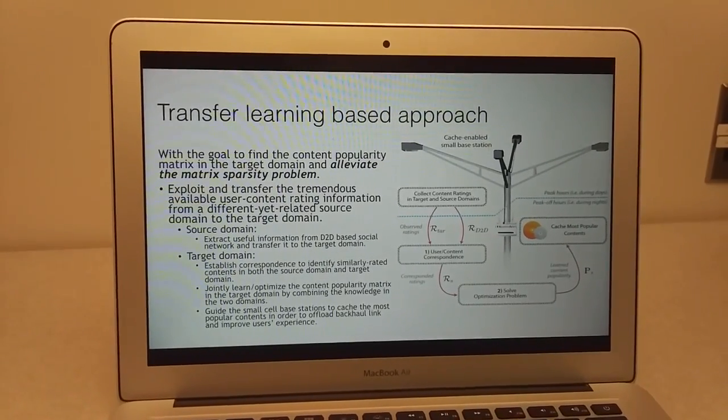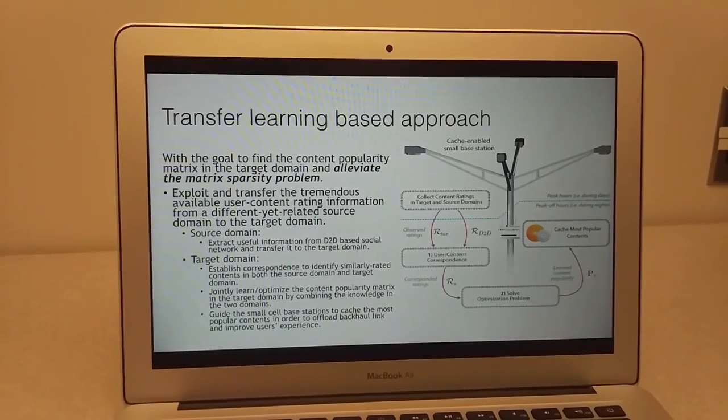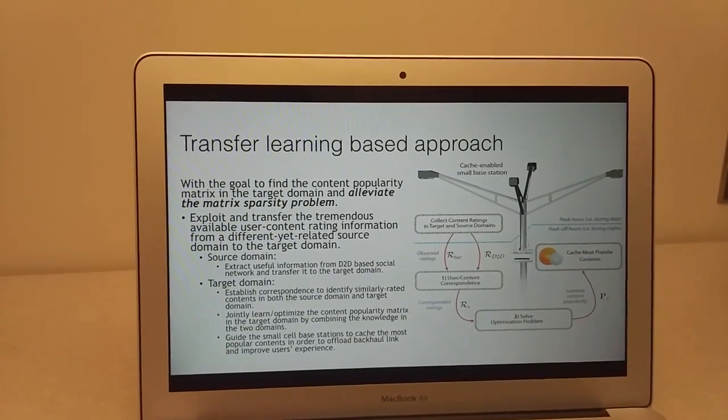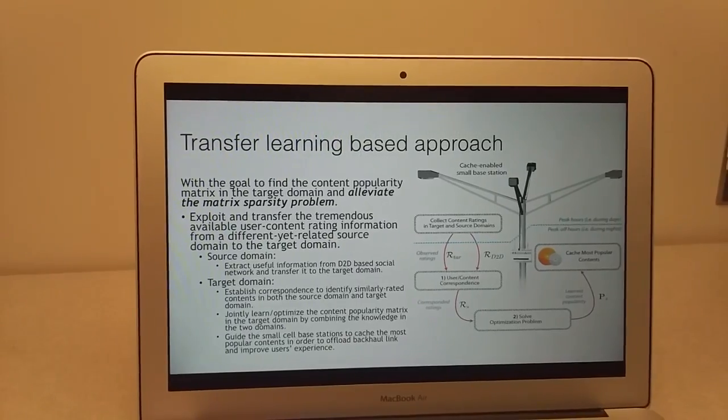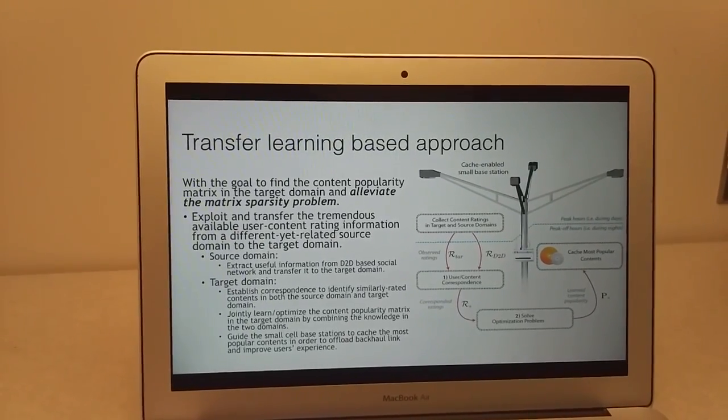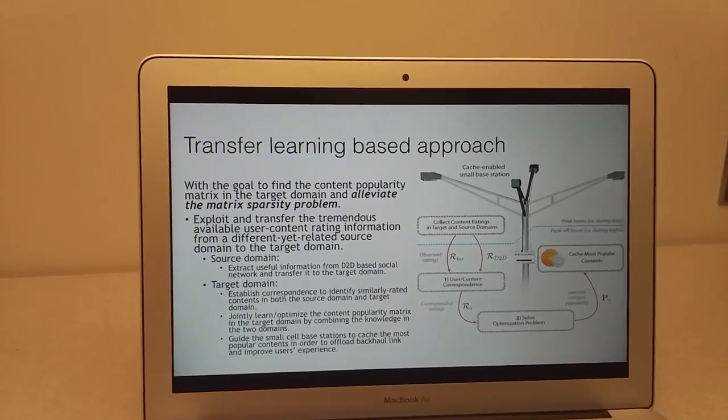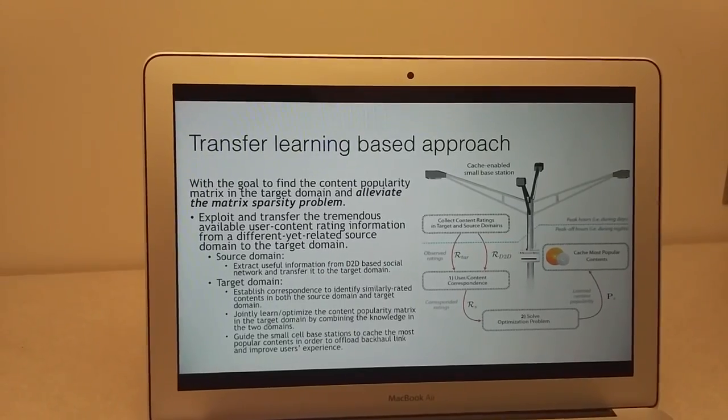Then, after obtaining the content popularity matrix, it guides the small cell base station to cache the most popular contents in order to offload the backhaul link and improve users' experience.